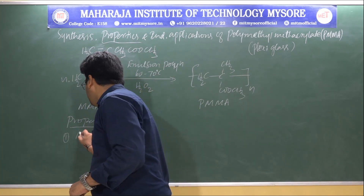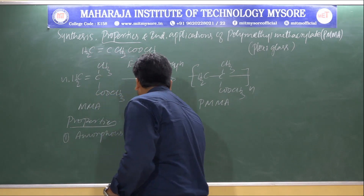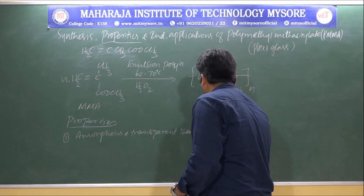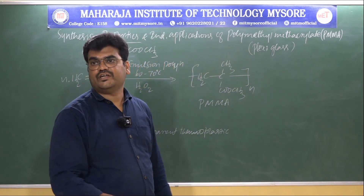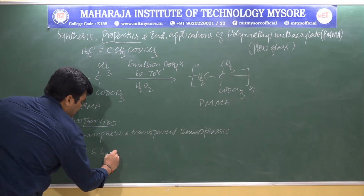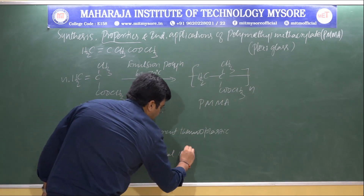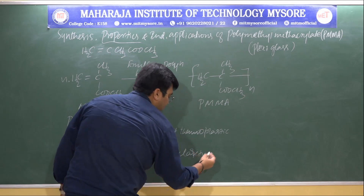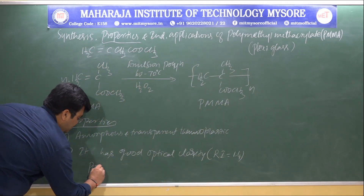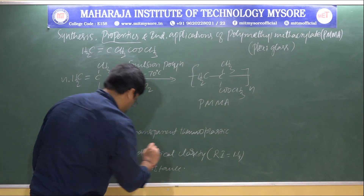Because it is transparent, PMMA has good optical clarity with a refractive index of 1.4. However, at the same time, it has poor scratch resistance.